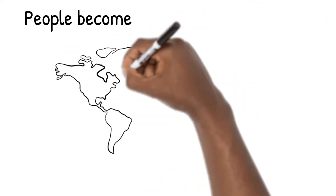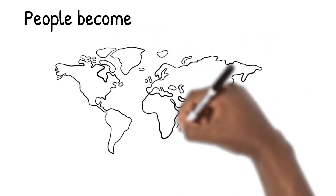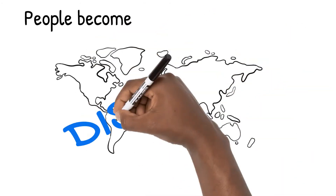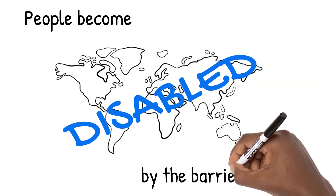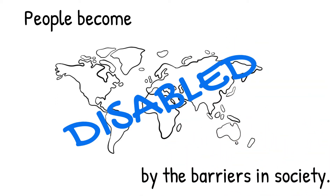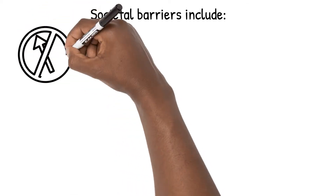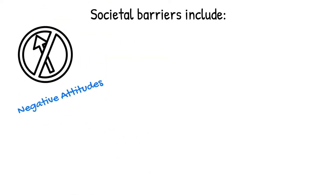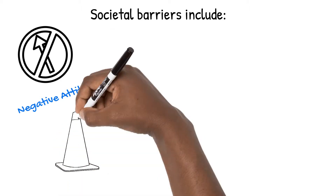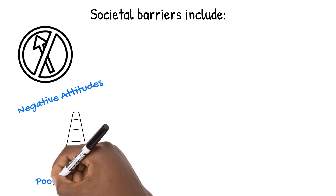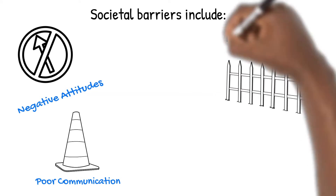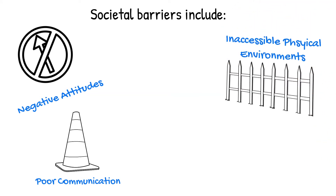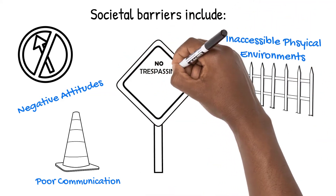An image of a world map appears. People become disabled by the barriers in society. Images of construction barriers are shown. Societal barriers include negative attitudes, poor communication, inaccessible physical environments, and no representations in organizations.